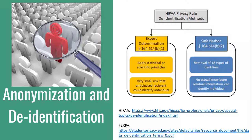HIPAA allows de-identification by either removing 18 personal identifiers or having an expert determine that the risk is very small that the information could be used, alone or in combination with other reasonably available information, to identify a data subject. I've also given you a link here to FERPA guidance on de-identifying student records as another example. Having said all this, it is possible that a TDM project could implicate a privacy statute depending on the data involved. A quick consultation with institutional counsel or a chief privacy officer should help answer this.